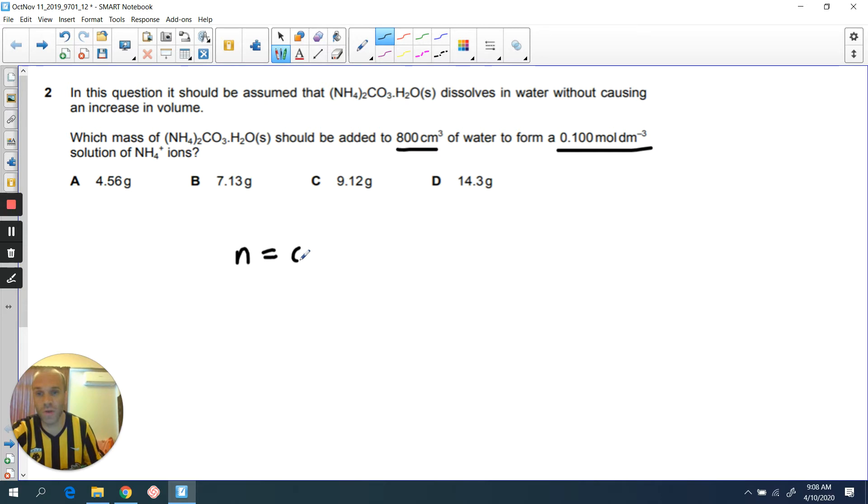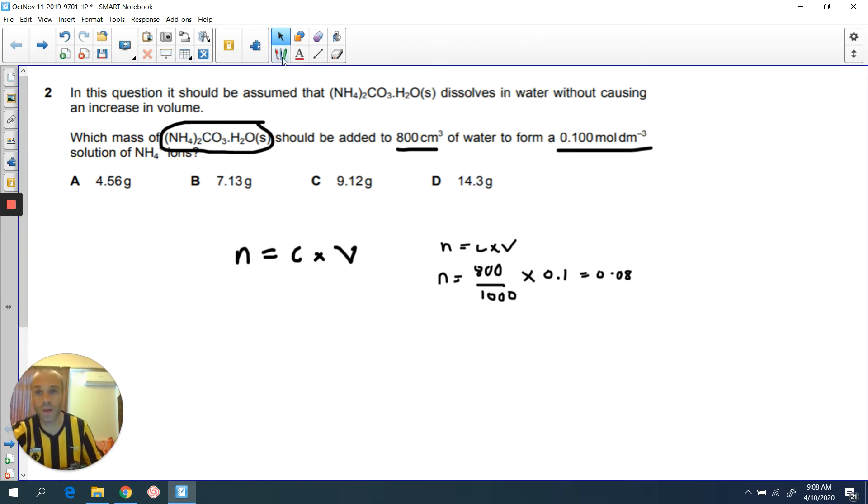Because they've given you these two values, that will allow you to find out the number of moles of this compound here, which will then allow you to find out the mass. In order to calculate the number of moles, we've got to convert this volume to cubic decimeters. And then there's your concentration provided there. And your answer coming out is 0.08 moles.